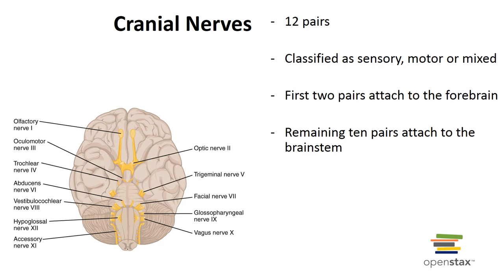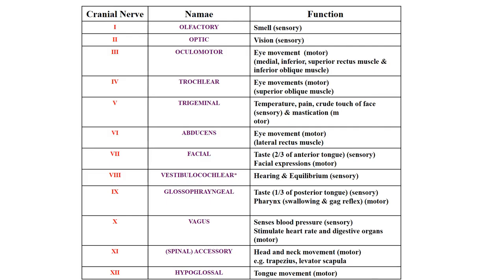The cranial nerves are classified as either sensory, motor, or mixed. Sensory cranial nerves contain sensory neurons only, motor contain motor neurons only, and mixed contain both. The first two pairs attach to the forebrain; the remaining 10 pairs attach to the brain stem. For each of the cranial nerves, you will need to know the name, number, a description of function, and be able to identify whether it is sensory, motor, or mixed.